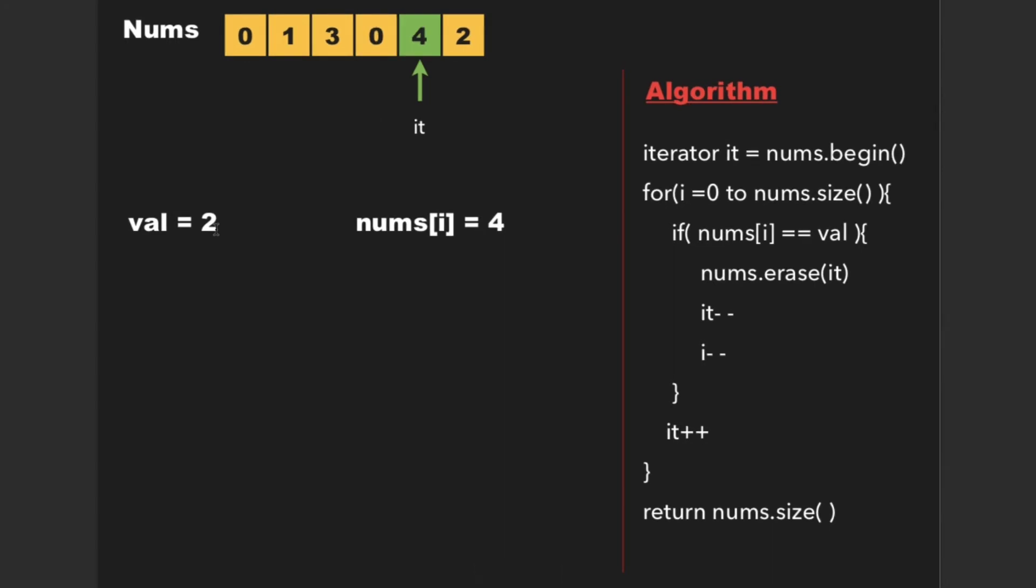Similar case with 4. And finally, when it points to 2, val and nums[i] are equal, so we erase 2 from nums array. Finally, we are left with a new array which contains 0, 1, 3, 0, 4,